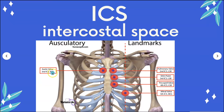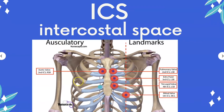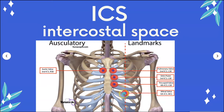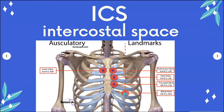One very important landmark you have to learn in nursing is where the PMI is — the point of maximum impulse. That is at the fifth intercostal space, mid-clavicular line. Here's the clavicle and you go down the middle of the clavicle; at the fifth intercostal space, where the mitral valve is, is where you can hear the heart the best. This was obtained from nurseseps.com.